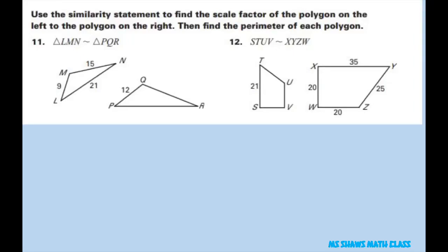Hi everyone! We're going to use a similarity statement to find the scale factor of the polygon on the left to the polygon on the right, then find the perimeter of each polygon.